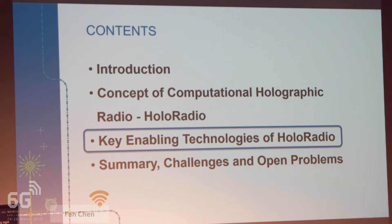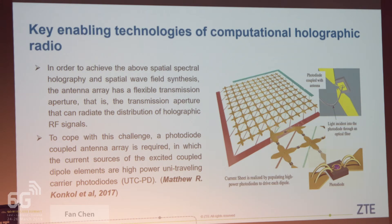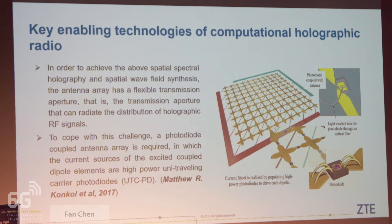Let's move to the third part: key enabling technology of holo radio. In order to achieve spatial holography and spatial wave field synthesis, the antenna array requires a flexible transmission aperture that can readily adapt the distribution of holographic IF signals. To cope with this challenge, a photo-diode-coupled antenna array is required, in which the current sources of the excited coupled dipole elements are high-power uni-traveling-carrier photodiodes (UTC-PD). This figure shows the UTC-PD coupled with the antenna array.